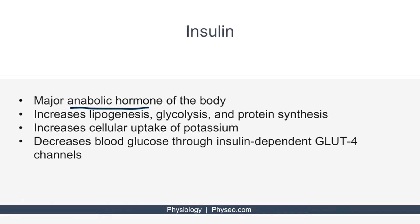Insulin is the major anabolic hormone of the body. It acts at the cellular level by increasing lipogenesis, glycolysis, and protein synthesis.